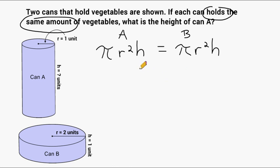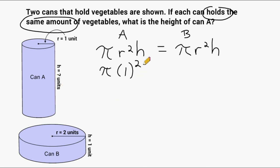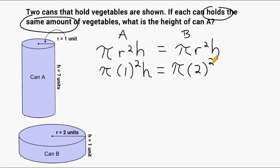Let's substitute all variables with known values. Looking at can A, the radius is one unit, so we substitute the radius with 1 and square it. We are trying to find the height of can A, so we leave h as a variable. For can B, we leave pi as pi, the radius is two units so we square 2, and multiply by the height of can B which is one unit.